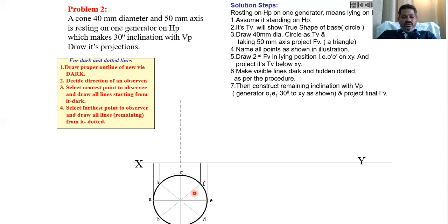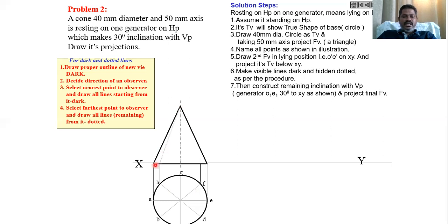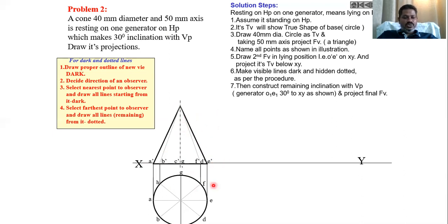Project all those points to the XY line, then draw a vertical line from the center of the cone. Take the compass at a height of 50 mm to get the apex point, then join the apex with points A and E, which are the edges of the cone seen from the front. Name those points A', B', D', E', C', and G'. This gives the top view as a circle and the front view as a triangle when the base is on HP.